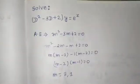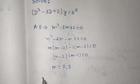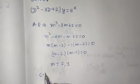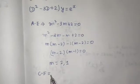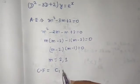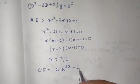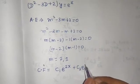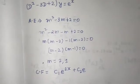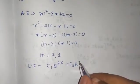So because they are real and distinct, you will find your complementary function by C₁e^(m₁x), so e^(2x) plus C₂e^(m₂x), which is e^x.